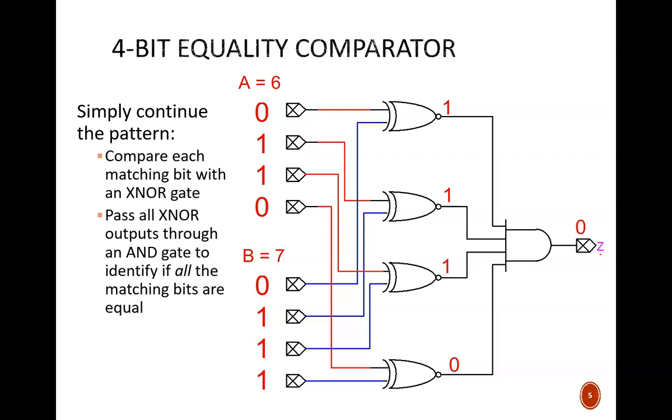The numbers are mostly equal, but not exactly equal. Correctly, this circuit tells us that 6 does not equal 7.